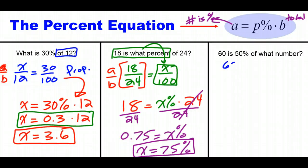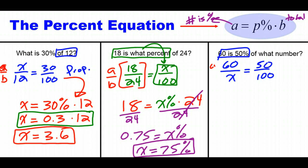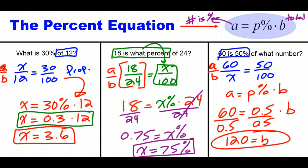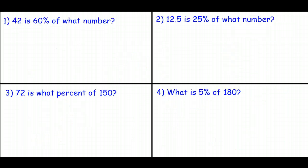60 is 50% of what number? 60 represents that 50% — it's the part, not the total. The proportion is 60 over X equals 50 over 100. As a percent equation: 60 equals 0.5 times B, since 50% is 0.5 or 1 half. Divide both sides by 0.5 and we end up with 120 equals B. Now pause the video and work on these four practice problems using the percent equation.